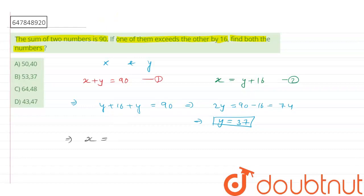So x is equal to, this implies x is equal to y plus 16. So this is equal to 37 plus 16, which will be 53, right?